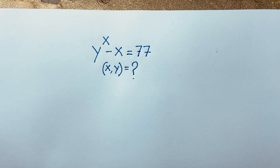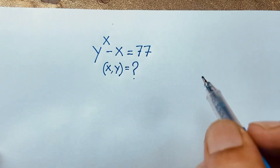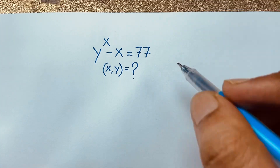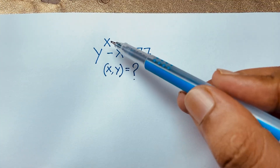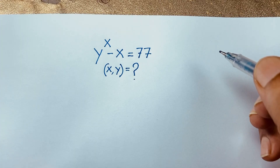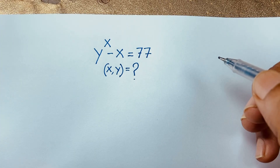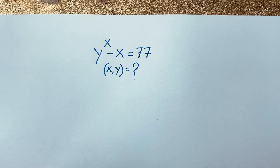Hello everyone, welcome to Russia's Classroom. Today we have solved a nice math problem. This question is y to the power x minus x is equal to 77. x, y is equal to what? How to solve this interesting math problem?